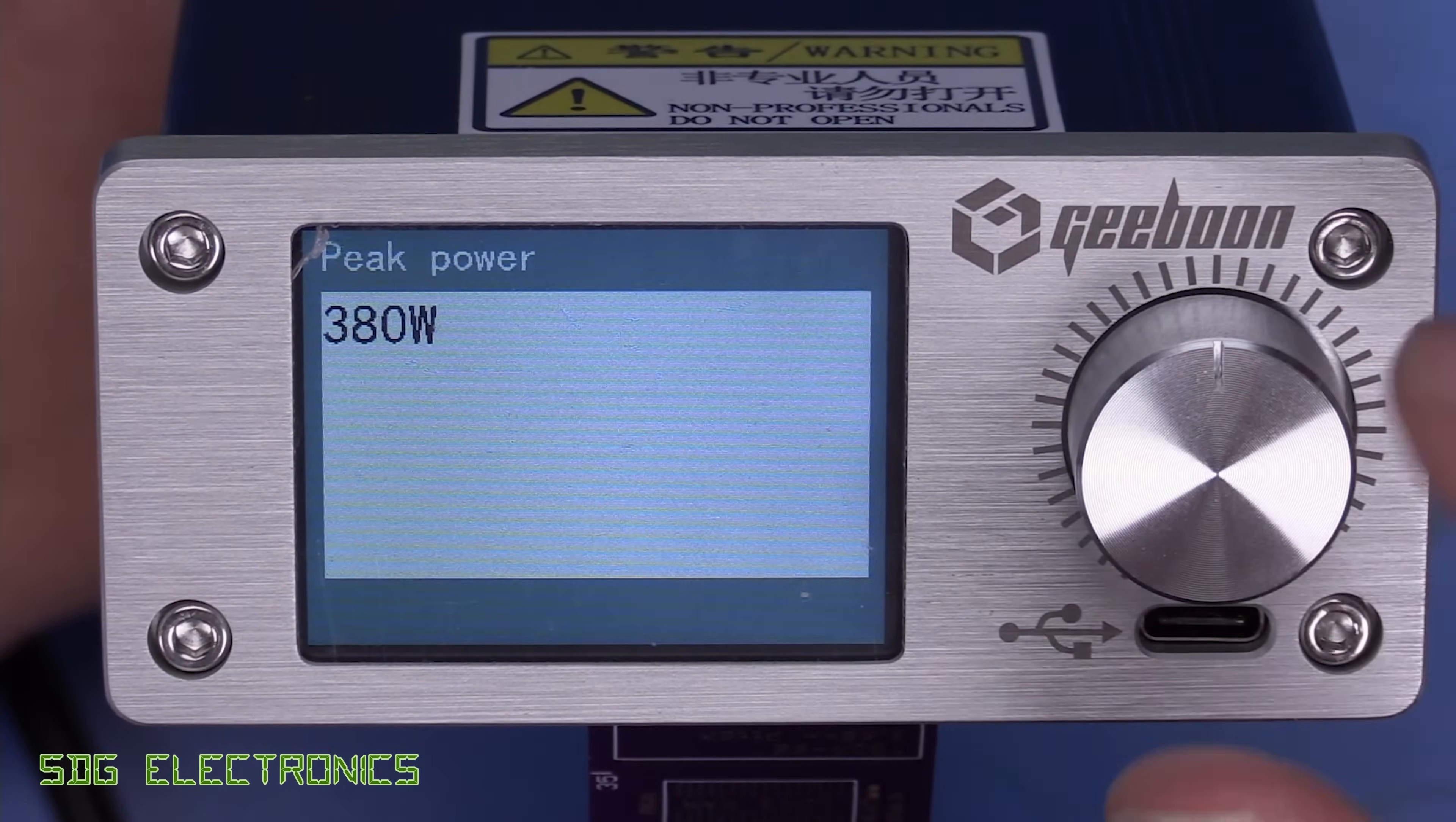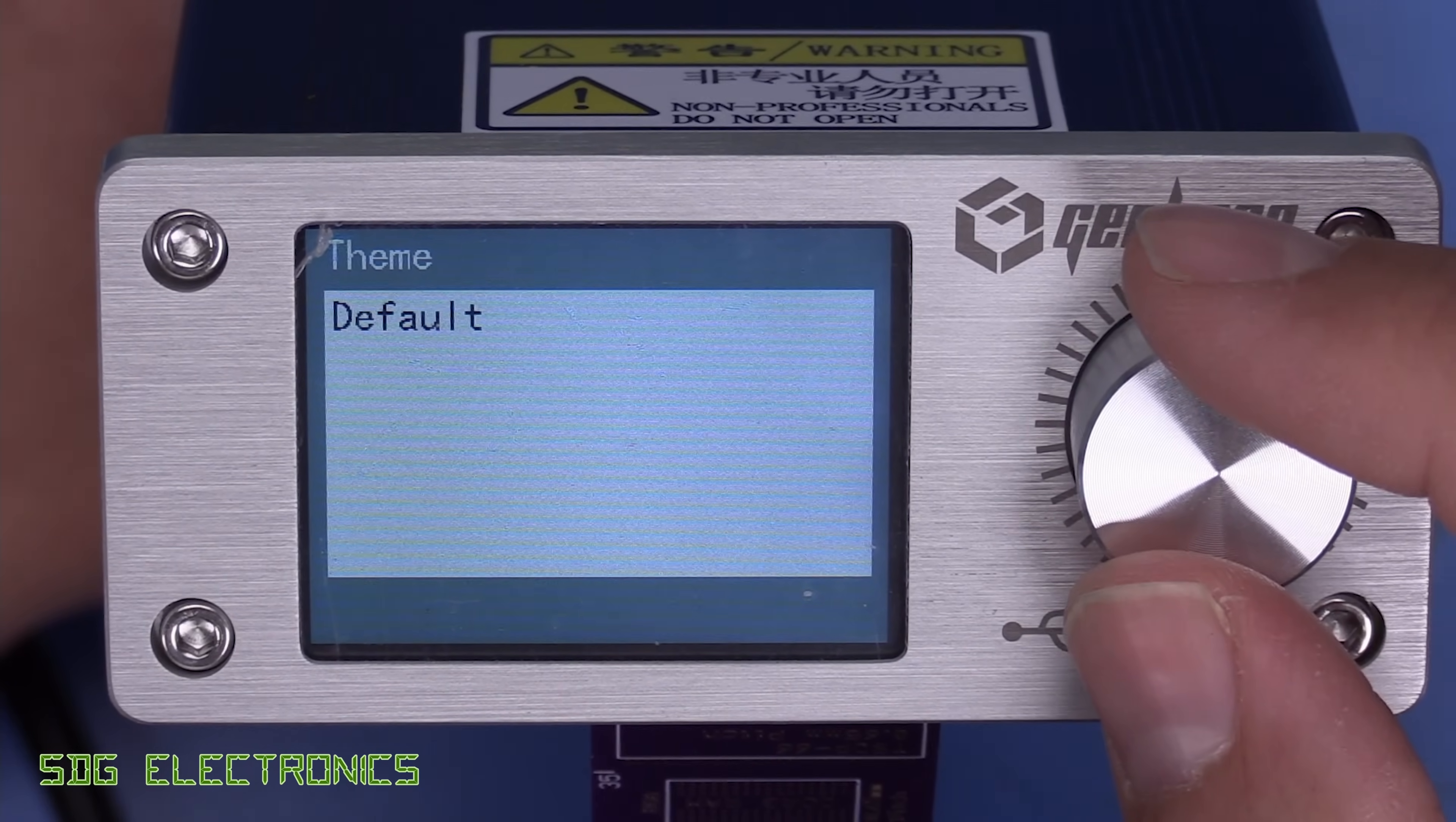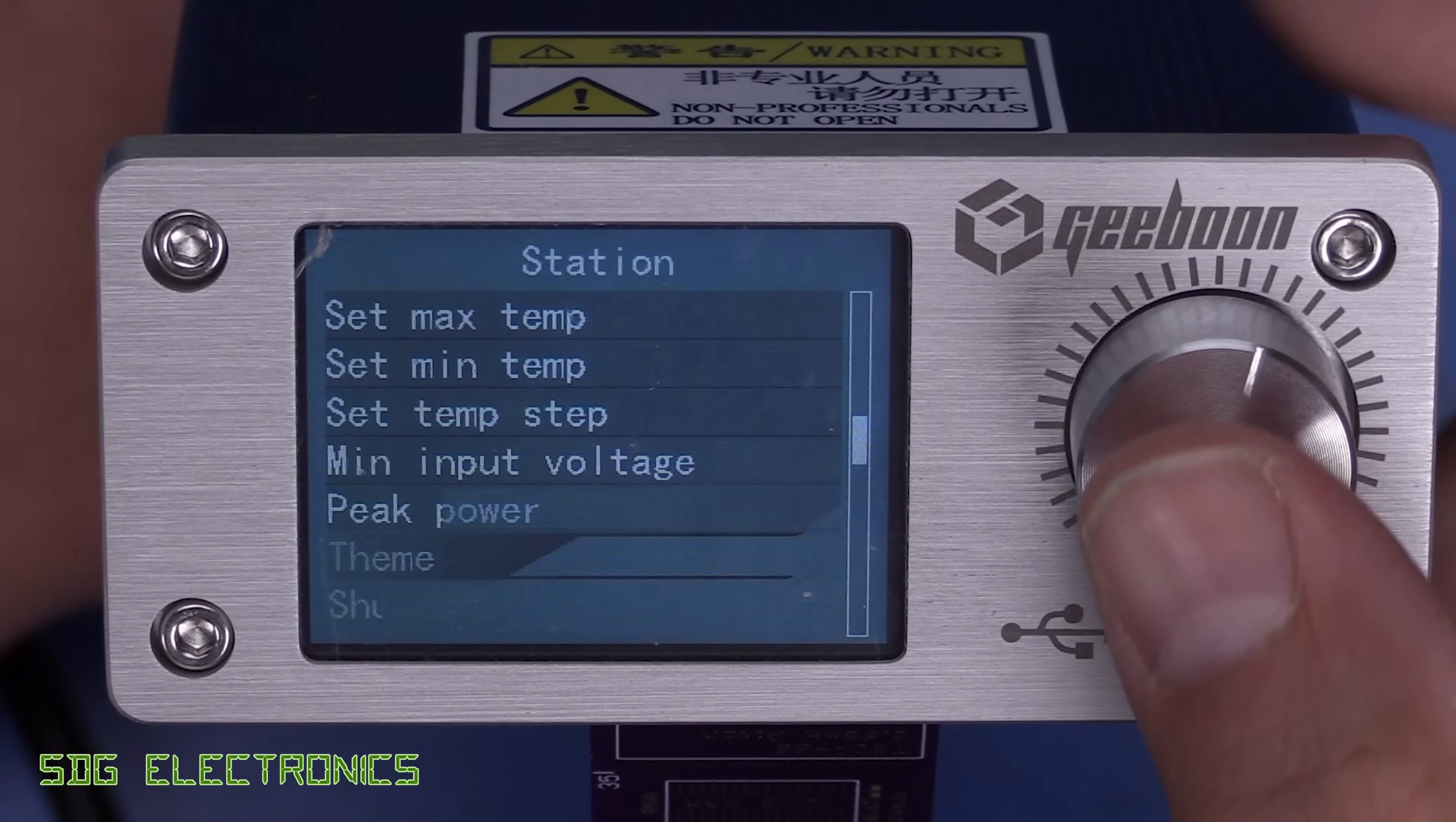We've got the peak power here, which is 380 watts, but we can adjust this again should we wish to. The theme, which is either the default or graphics. So there is a mode where you can just have the text on the front panel. So the temperature with large digits, or you can plot it on a graph.